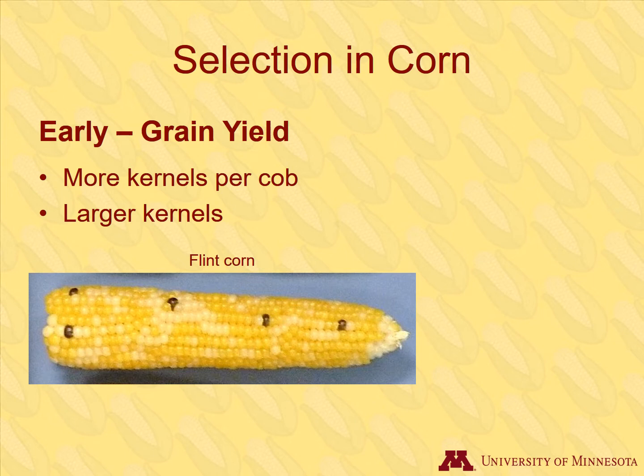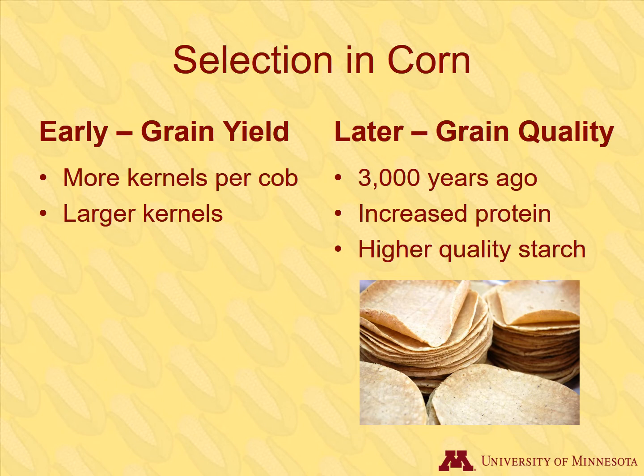Things only improved over the next thousands of years. Eventually, early breeders developed corn with even more and larger kernels, such as this flint corn. Around 3,000 years ago, Native Americans also started selecting for traits related to the quality of the kernels to make better tortillas. This resulted in changes in the kernels for increased protein and higher quality starch for making tortillas.